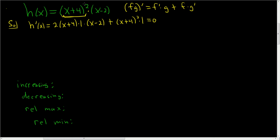Let's verify. We took the derivative of the first — we brought the 2 down, so we got 2(x + 4), and then took the derivative of the inside using the chain rule, which is 1, times the second piece, plus the first piece times the derivative of the second piece, which is just 1. At this point we'll factor out what we can — it looks like we can factor out an (x + 4).